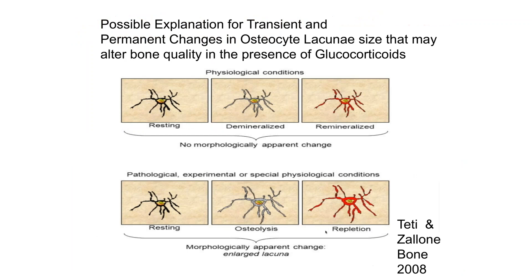How does that relate to bone strength in the presence of glucocorticoids? Laura Teddy and colleagues showed a concept that osteocytes in a resting state can demineralize, and when the stress goes away — say glucocorticoids are stopped — they can remineralize. But if they don't remineralize, those large osteocyte lacunae could result in weakening the bone and increasing the risk for fragility fractures.